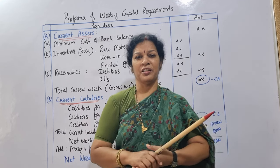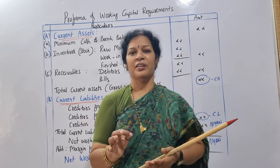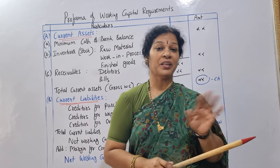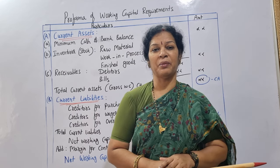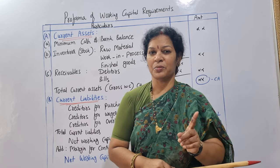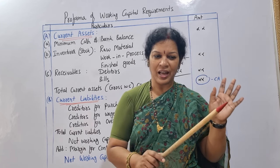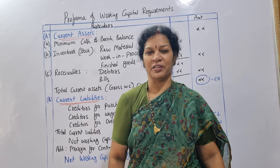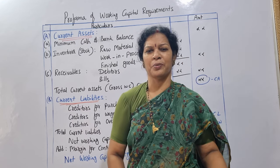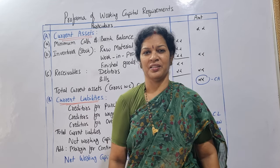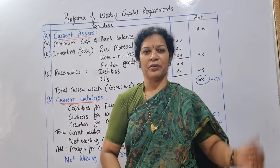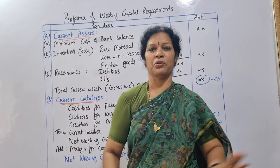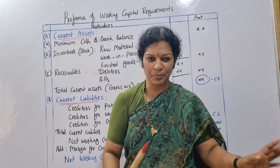Working capital means what? In general, working capital means the current assets are working capital. That is, we call it the net working capital. The net working capital means current assets minus current liabilities. We are doing the current assets minus current liabilities, and we can identify the current assets as well as the current liabilities.